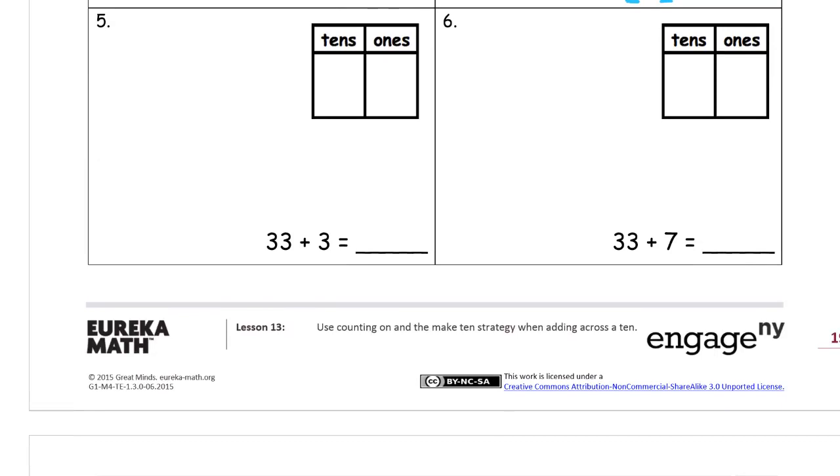33 plus 3. So here we need 10, 20, 30, 31, 32, 33. And now we need three more ones: 34, 35, 36. So you can see that there's six ones here and there's three tens. 33 plus 3 is going to be 36.